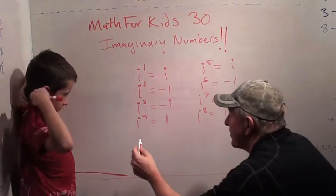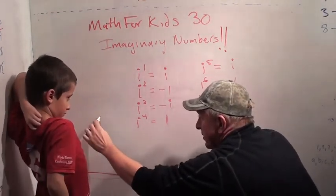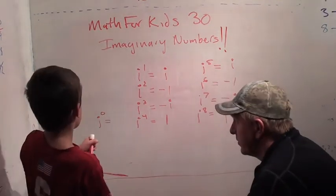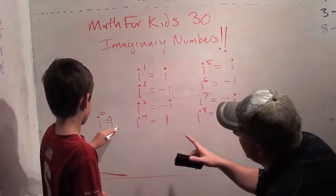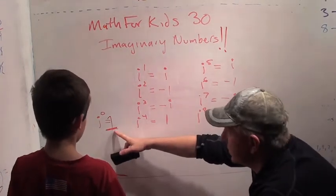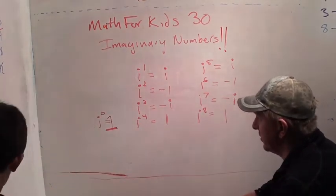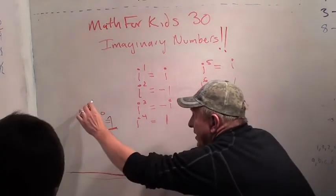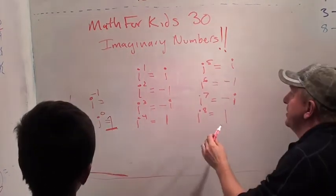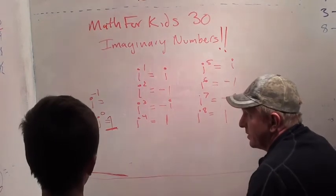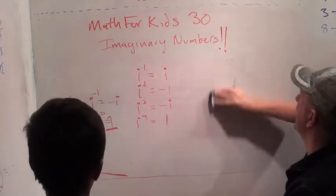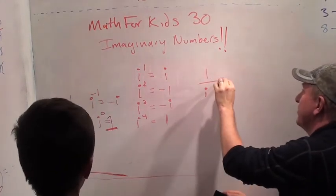Let's talk about one other thing: I to the zero. We know anything to the zero power is one. So that's nice. The pattern is that I to multiples of four equals one. Now we're going to learn I to the minus one, which is just one over I. If this pattern continues, what comes before one? Minus I. So one over I equals minus I. Cool! One over I equals minus I. I has all these crazy properties.